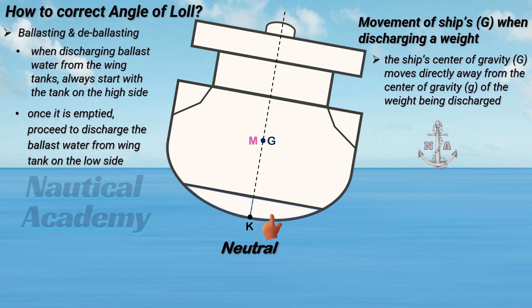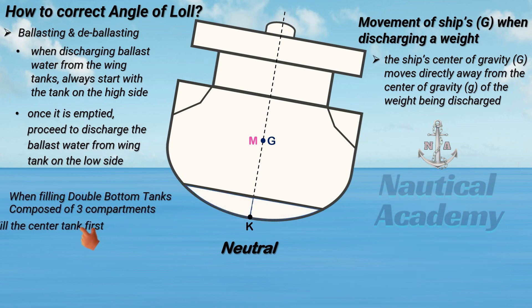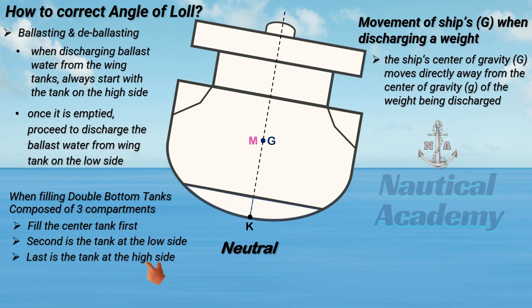When doing this, if there are three compartments, fill the center tank first with ballast. When it is full, the tank at the low side will be the next to be filled, and the last to be filled with ballast is the tank at the high side. If there are only two compartments, fill the tank at the low side first, then when it is full, fill the tank at the high side.